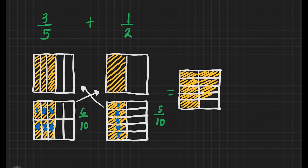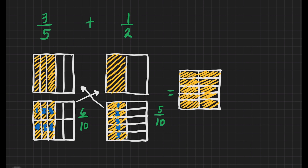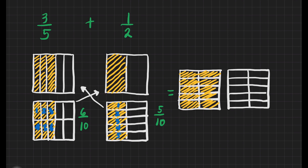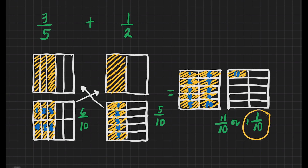And we will shade 5 parts for the second fraction: 1, 2, 3, 4 — oh, that's only 4, we need 1 more. So it is lacking; we need to have 1 more shaded part, which means we have to draw another box. And we will shade 1 more. Now we'll count: 1, 2, 3, 4, 5, 6, 7, 8, 9, 10, 11 — that is all 11 shaded parts. If you're going to write it, that's going to be 11/10, or 1 whole and 1/10. That is so easy for us to visualize and arrive at the correct answer.